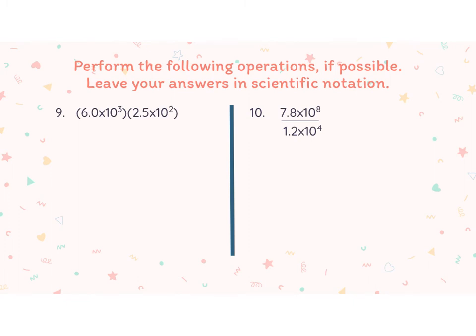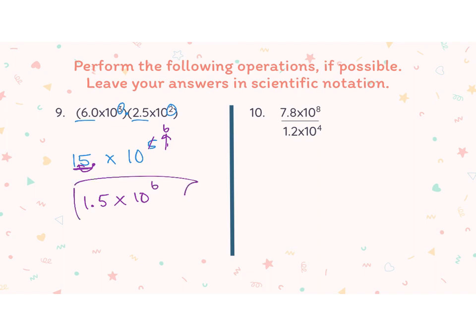Now for more multiplication. I have 6.0 times 10 to the third times 2.5 times 10 to the second. I multiply the two coefficients: 6.0 times 2.5 gives me 15. Then I add the exponents: 3 plus 2 gives me 10 to the fifth. But this isn't the final answer because 15 has two digits in front of the decimal point, which isn't valid scientific notation. So I move the decimal back one place: 15 becomes 1.5, and my exponent increases from 5 to 6. The answer is 1.5 times 10 to the sixth.